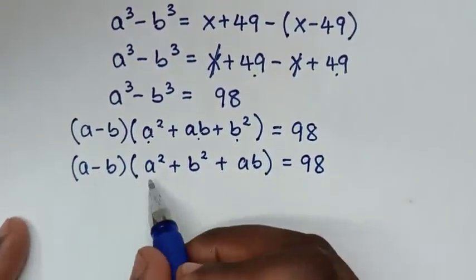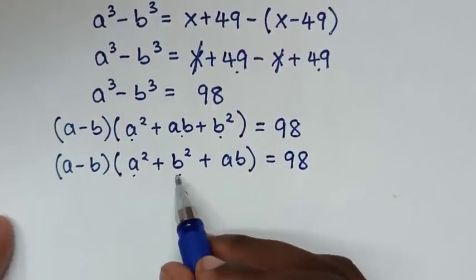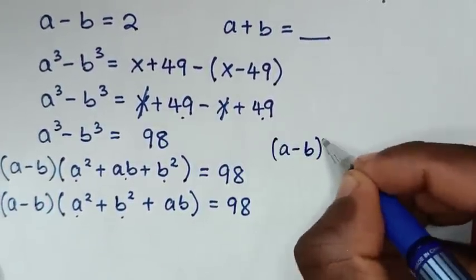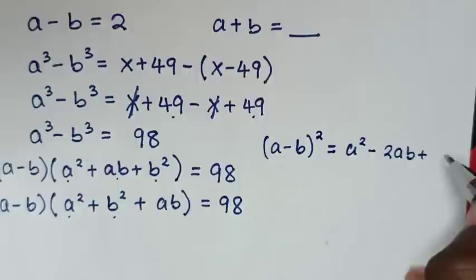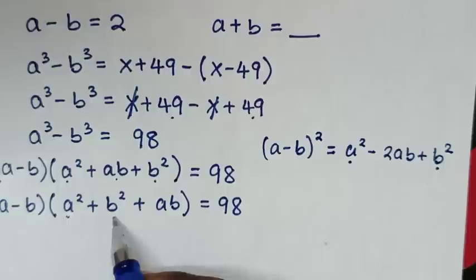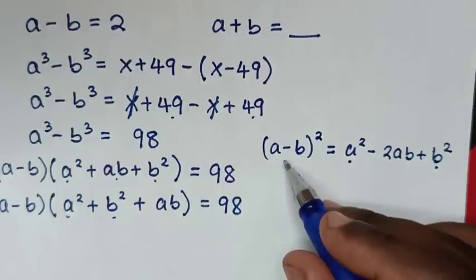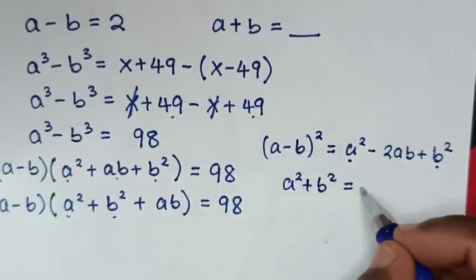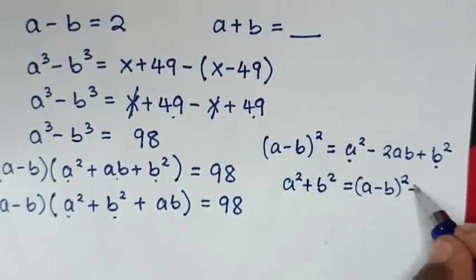Now we need to express a² + b² in terms of (a - b). We use the identity: (a - b)² = a² - 2ab + b². Rearranging, a² + b² = (a - b)² + 2ab.